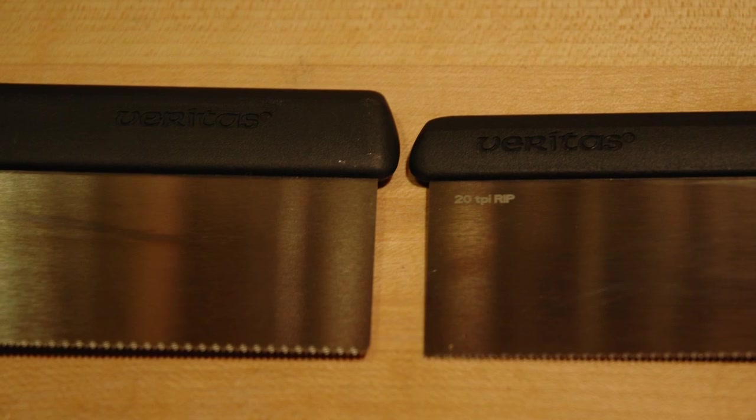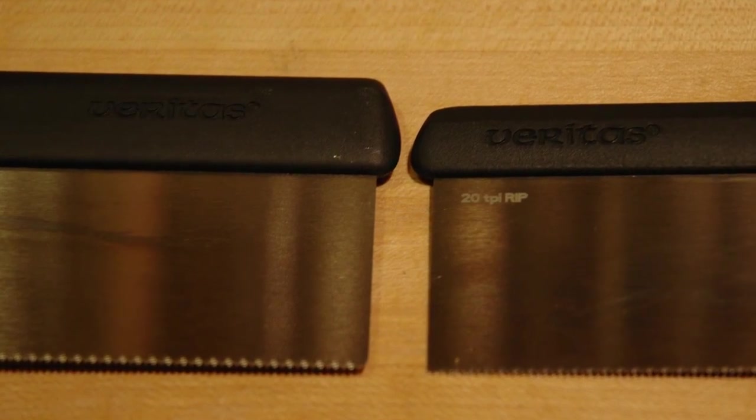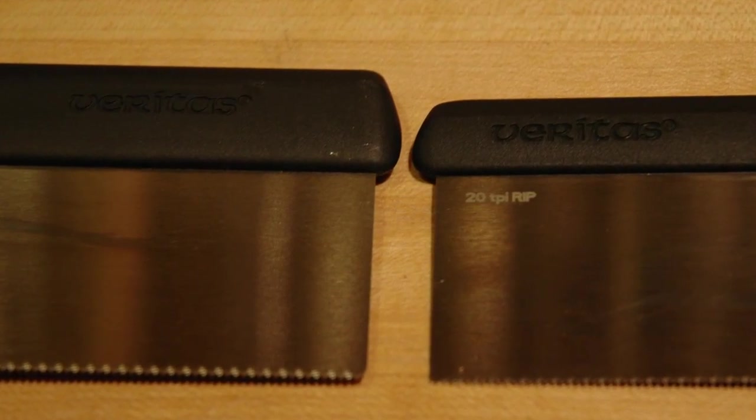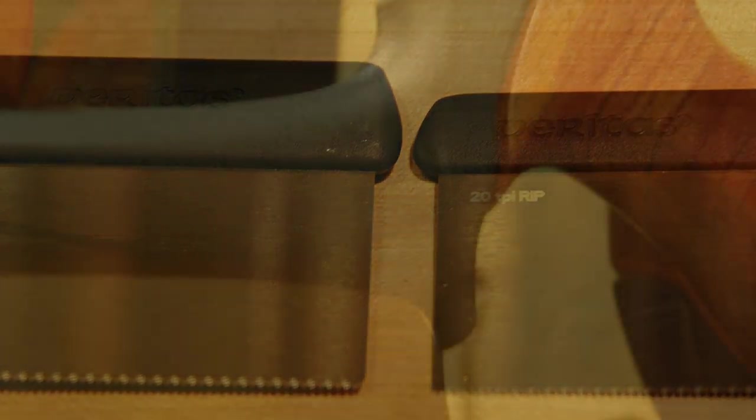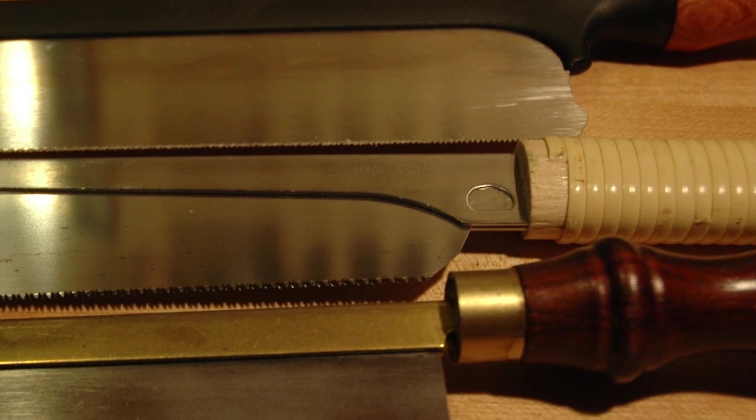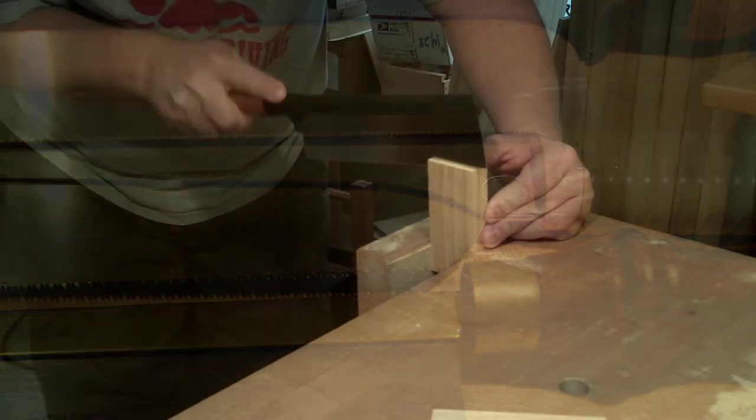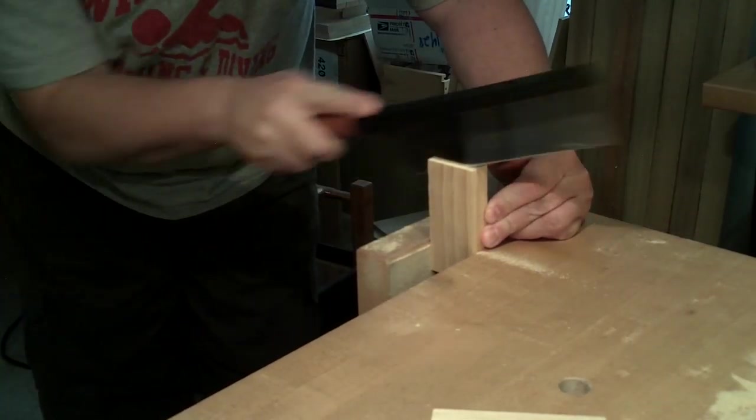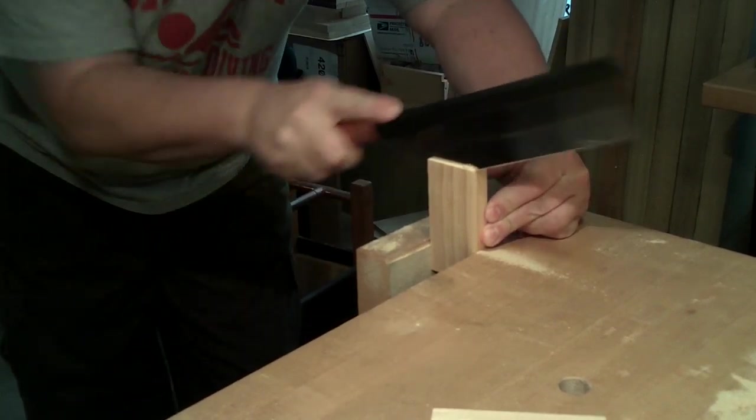The depth of the blade is realistically close enough to the pistol variation that it shouldn't be a factor in making a decision between the two. Yes, technically, the pistol is a bit more, but the back has a taper to it, whereas the gents does not. A typical small Dozuki has a much more dramatic taper. I mention that because for ripping something like a small tenon, the gents is much more capable than a small Dozuki.